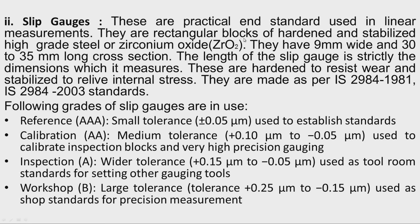The second type of end standard is the slip gauge. They are rectangular blocks of hardened and stabilized high-grade steel or zirconium oxide. They have a 9 mm wide and 30 to 35 mm long cross section. The length of the slip gauge is the dimension which it measures. They are hardened to resist wear and stabilized to relieve internal stresses. They are made as per IS 2984:1981 and IS 2984:2003 standards.